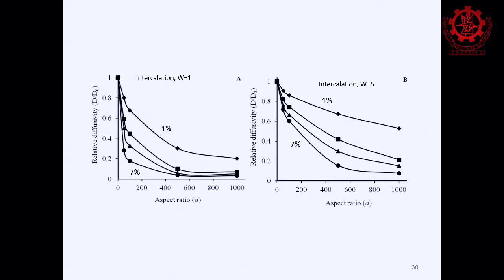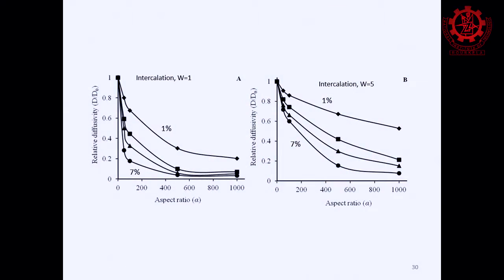This shows how nanoplatelet parameters — aspect ratio, loading percentage, and intercalation — affect the gas diffusion or barrier property of the film, as shown across the different figures. A student then asked: what is the procedure for incorporating nano clay into the polymer solution?